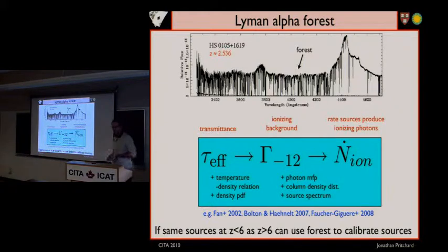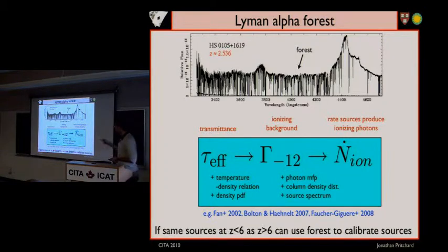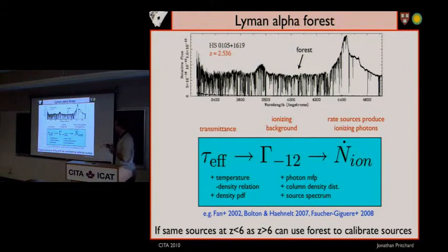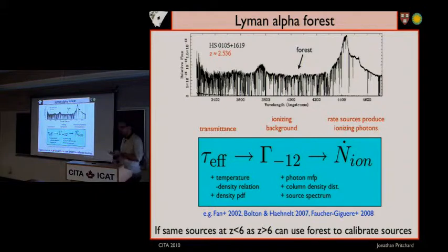We also have measurements from the Lyman-alpha forest. Here you have a very bright quasar, and you're observing absorption by dense hydrogen clumps along the line of sight. That produces this forest of lines. One can measure the transmittance of Lyman-alpha photons, and then if you make assumptions about the properties of the intergalactic medium, you can link that to the ionizing background at that time. If the ionizing background was higher, there'd be less neutral hydrogen and so you'd see more transmission. But that's quite an uncertain inference.